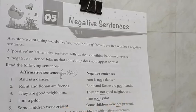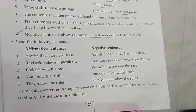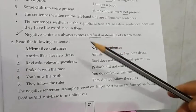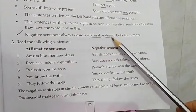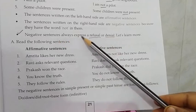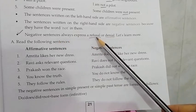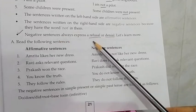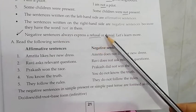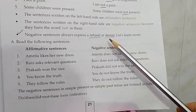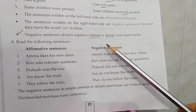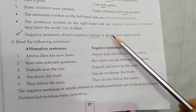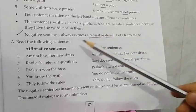So remember, negative sentences always express a refusal or denial. Always, negative sentences express refusal. Refusal means it is an expression of unwillingness or not agreeing. Same way, denial — something is not true, or you refuse to believe or accept something as truth.